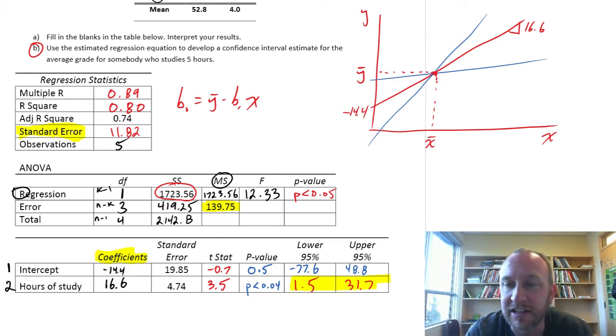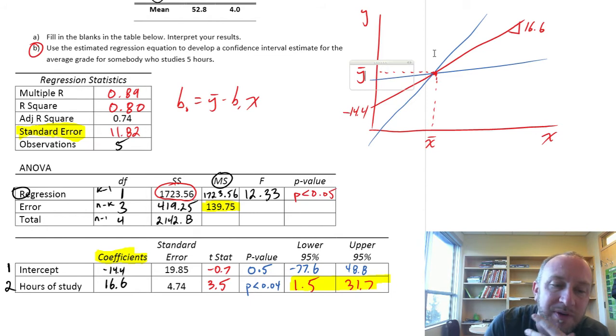So what we're going to do here now is use our estimated regression equation and calculate a confidence interval for a predicted value of y. So we need first, as with any confidence interval, a point estimate of y.